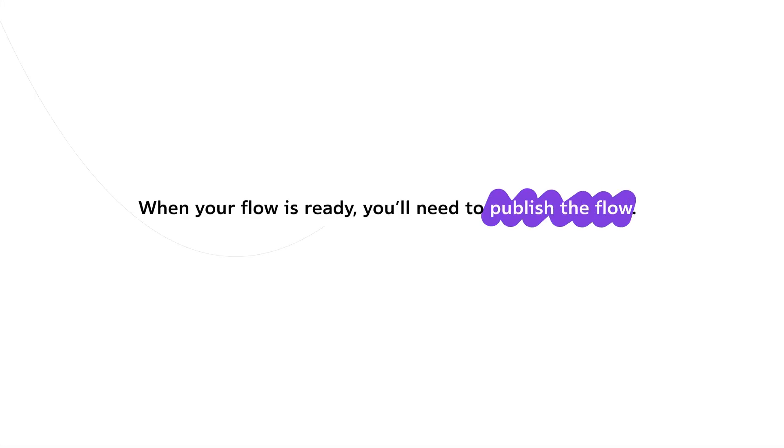Connecting your account ensures ActivePieces has the permissions it needs to interact with these services seamlessly. Finally, when your flow is ready, you'll need to publish the flow. This ensures your automation is live and running in the background. In our example, every week at the scheduled time, our bot will send a message to our Slack channel without any manual effort from us. Now that you understand the basics, let's dive into the step-by-step process of building this flow.